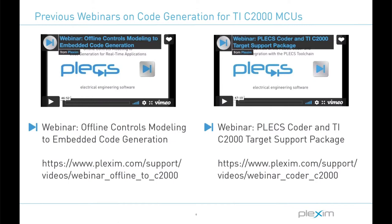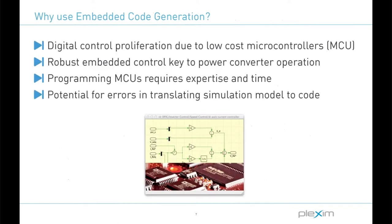Before we begin, I should mention that two previously held webinars covered the basics of embedded code generation in Plex. The links to these recorded webinars are listed on the screen. They go through the motivation behind using automated code generation and the code generation workflow in detail. Both webinars show using the TI C2000 code generation to control power hardware. There will be some overlap at this webinar, but we'll mainly focus on multitasking code generation today. Although the main focus is multitasking code generation, it is important to first understand embedded code generation in Plex.